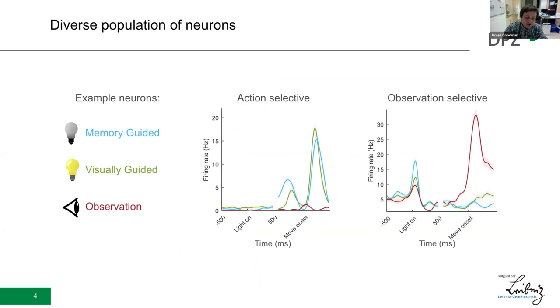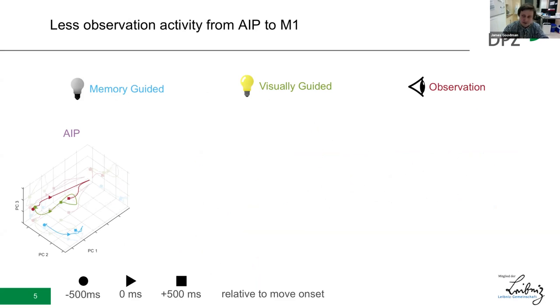And the neurons we recorded across these areas exhibited a wide variety of different preferences for action and observation. Shown here are peri-event time histograms of two example neurons showing high selectivity for one or the other, representing the range of responses we see across these areas.